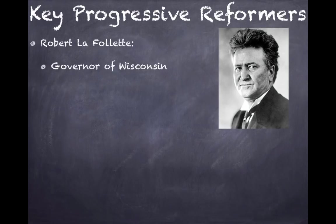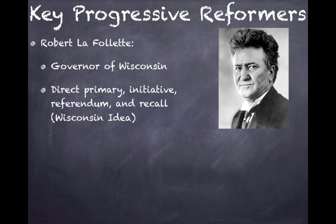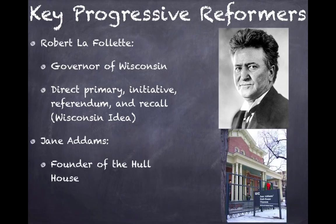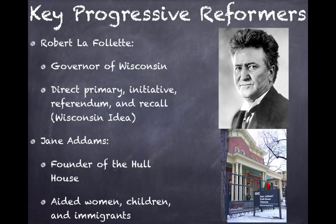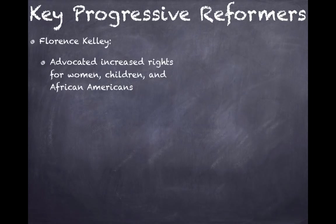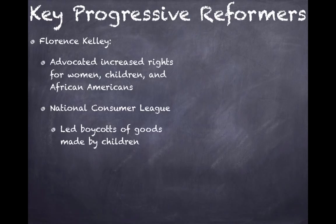Key progressive reformers you should know: Robert LaFollette, governor of Wisconsin, was instrumental in bringing the direct primary, initiative, referendum, and recall to Wisconsin — known as the Wisconsin Idea. Jane Addams — know her — is the founder of Hull House in Chicago, a settlement house that aided women, children, and immigrants, helping them assimilate and adapt to American society. Florence Kelley worked with Jane Addams and advocated increased rights for women, children, and African Americans. She was instrumental in founding the National Consumer League, which led boycotts of goods made by children.